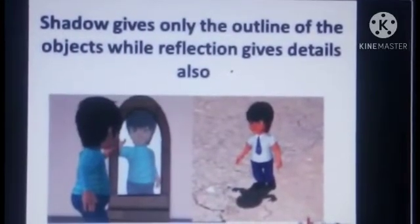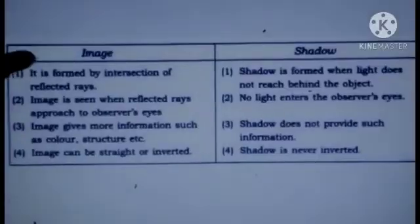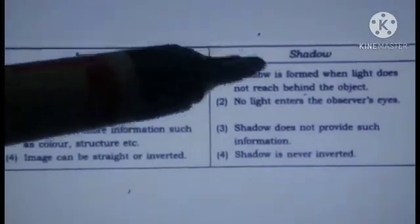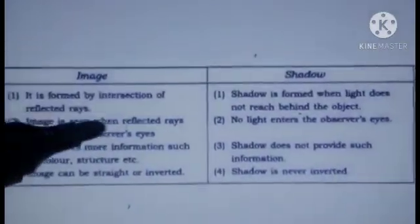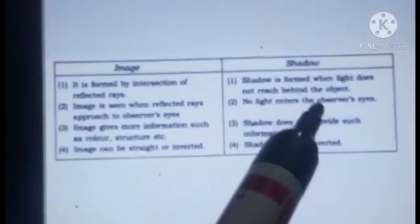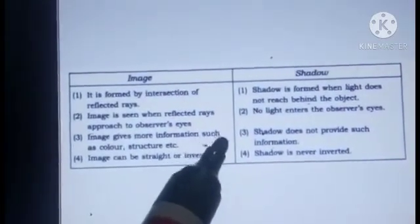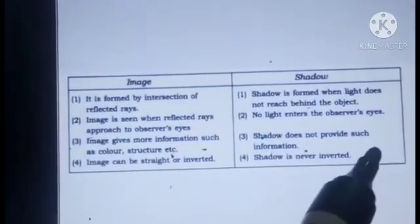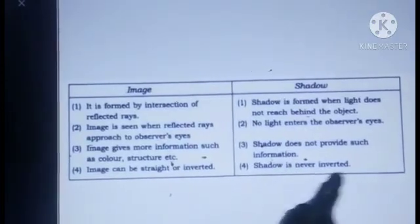Shadows give only the outline of an object while reflection gives details also. Shadow is formed when light does not reach behind the object. Image is seen when the reflected rays approach the observer's eyes, whereas no light enters the observer's eyes in the case of a shadow. Image gives more information such as color, structure, etc., while shadow does not provide such information. Image can be straight or inverted, but shadow is never inverted.